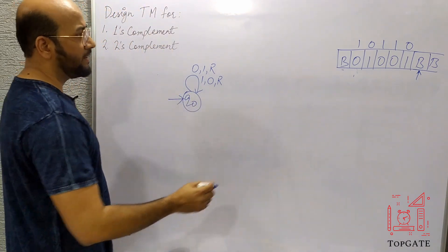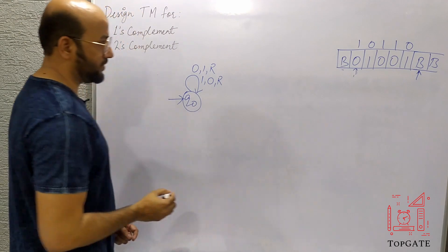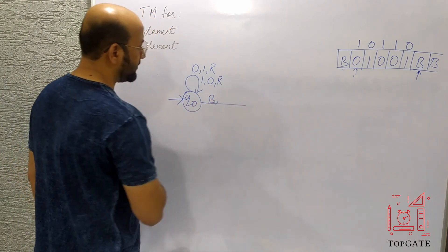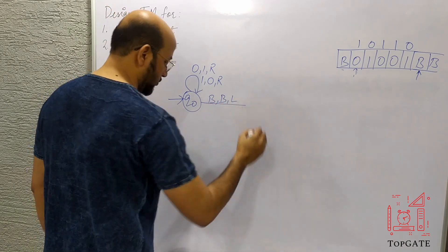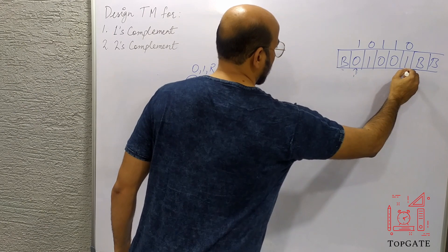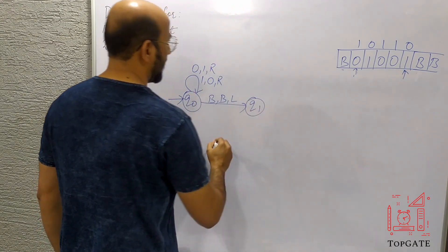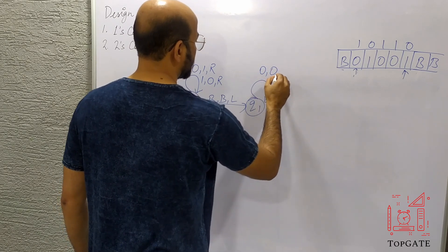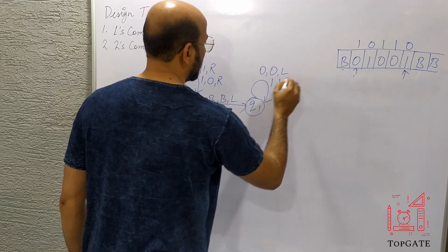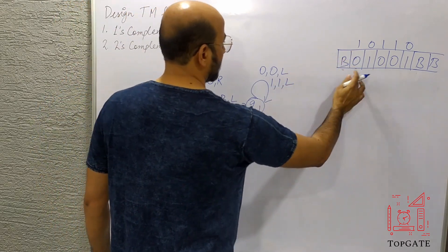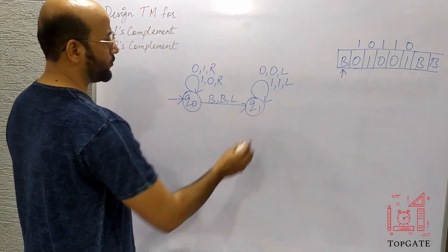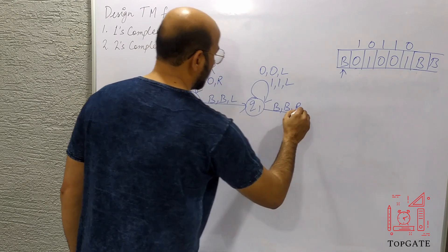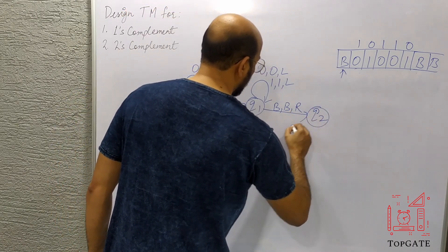Now I need to point the pointer back to the first digit, since that's where the output is displayed. When I find the blank, I keep it as blank and take a left turn, moving to state q1. At q1, I take a self loop — if I find 0, keep it as 0 and go left; if I find 1, keep it as 1 and go left — skipping all digits until reaching the blank on the left.